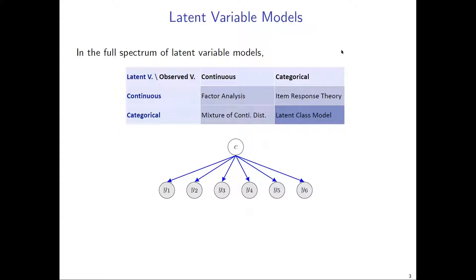Traditionally there is a so-called latent class model that is the canonical choice for this setting. The latent class model was proposed by sociologists in the 1950s, first to model survey response data. It assumes there is a univariate discrete latent variable c that renders conditional independence of multiple discrete outcome variables y1 through yp. In this graphical model representation, white nodes are latent variables and gray nodes are observed variables.